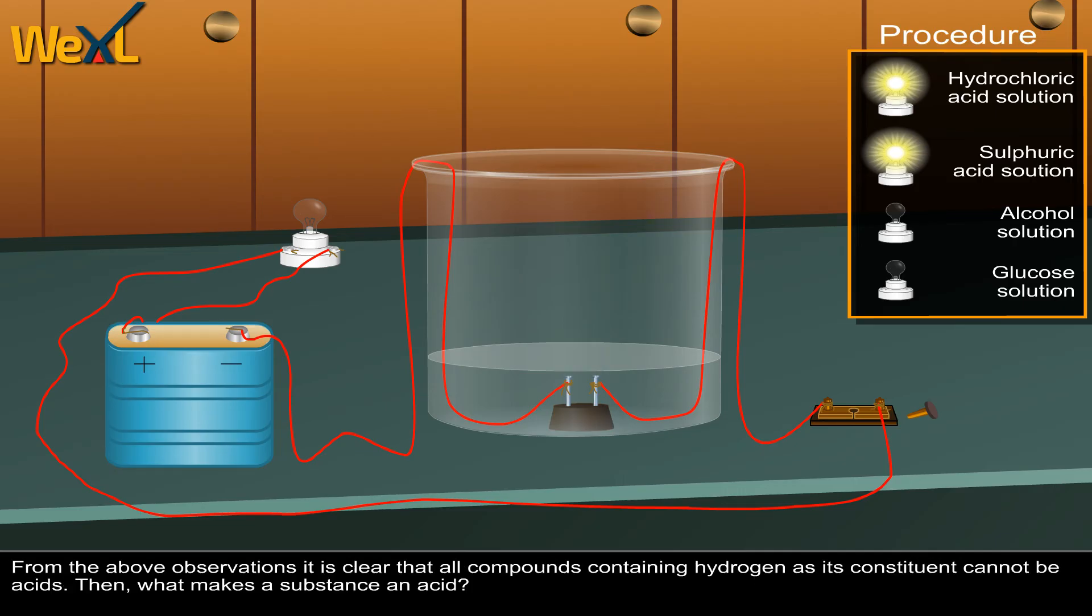From the above observations it is clear that all compounds containing hydrogen as a constituent cannot be acids. Then what makes a substance an acid?